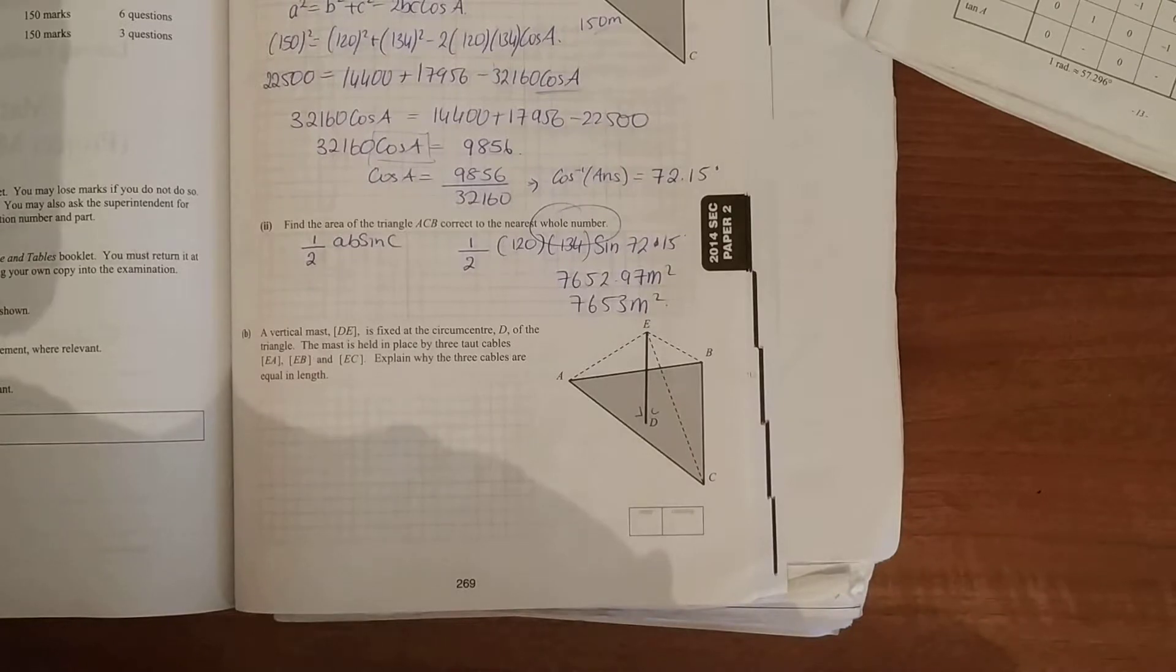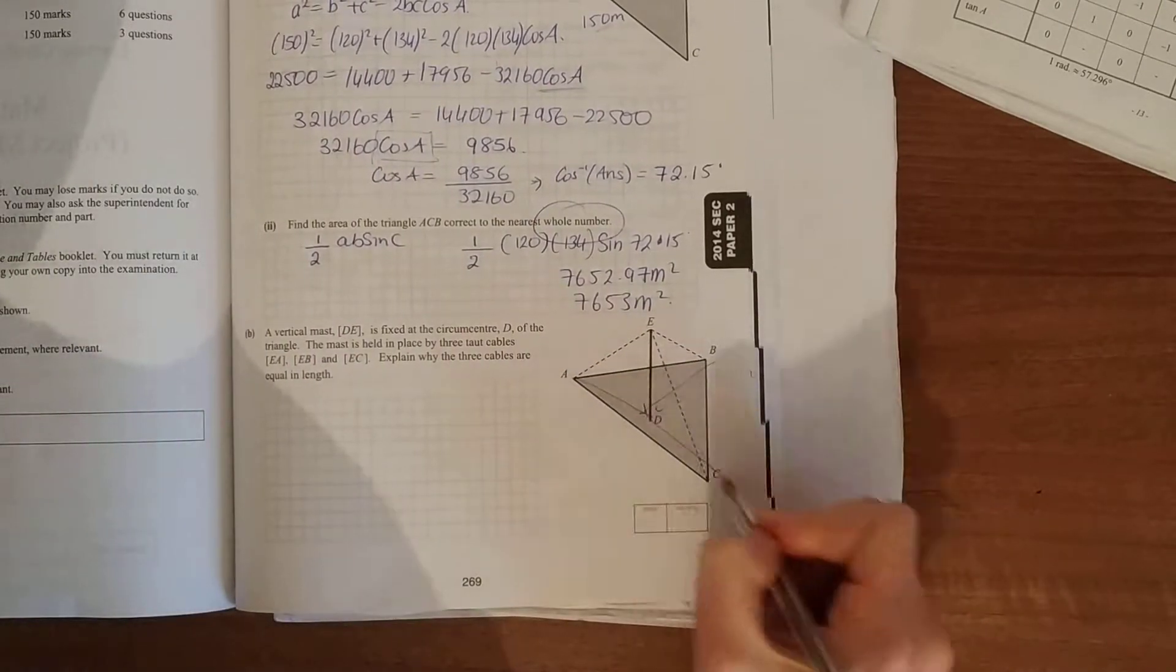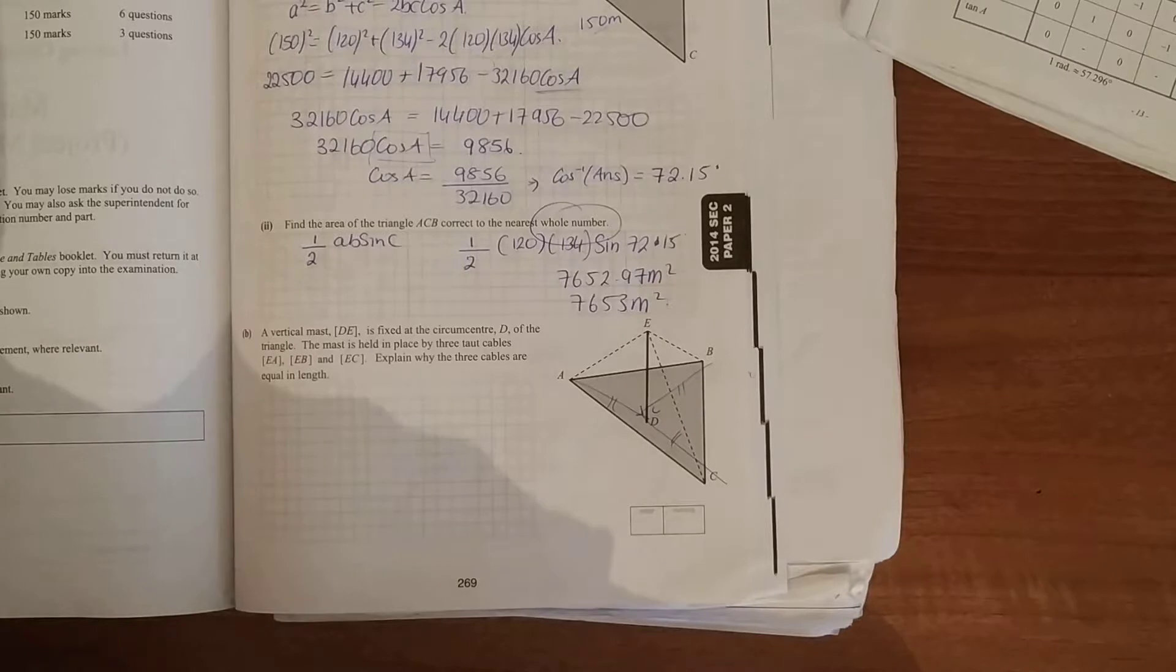It makes contact with the ground, it's fixed at a circumcenter D, so that means these are the same distances from each other. The mast is held in place by 3 taut cables, EA, EB, and EC.